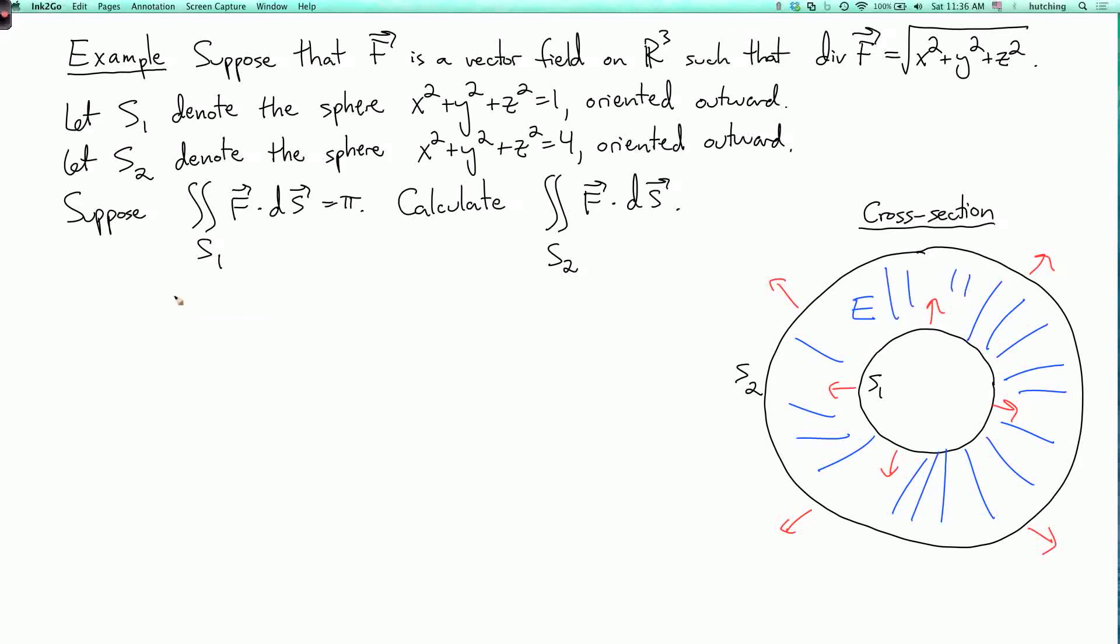Then, in equations, E is the set of x, y, z such that x squared plus y squared plus z squared is between 1 and 4.